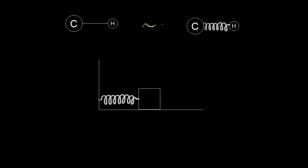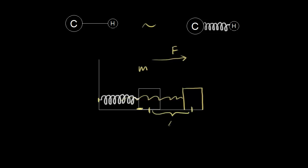Here I have a box of mass m, and there's no friction between the box and the ground, but the box is attached to a wall by a spring. If you grab this box and pull it to the right, you apply a force to the right and stretch the spring, moving the box over a distance of delta x.